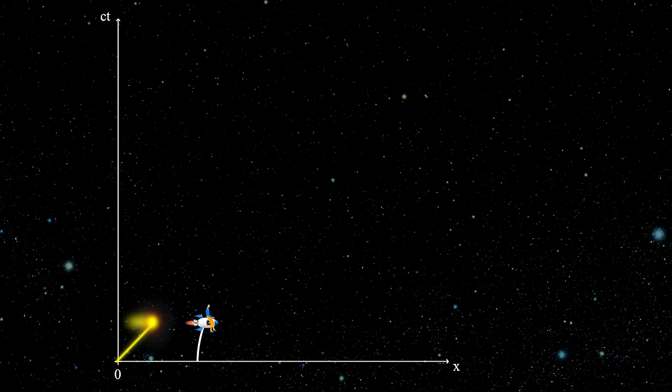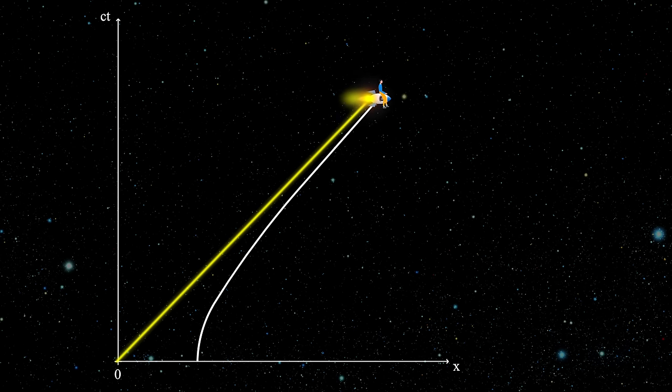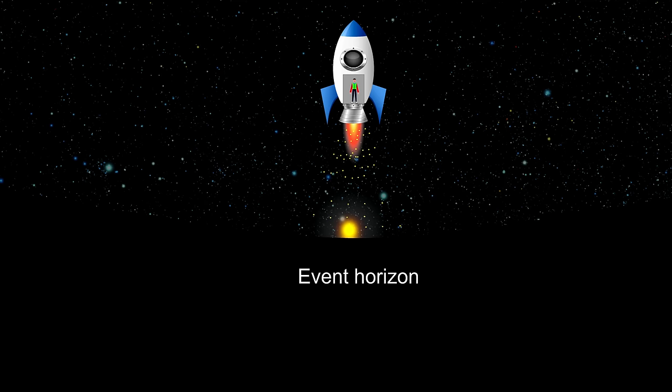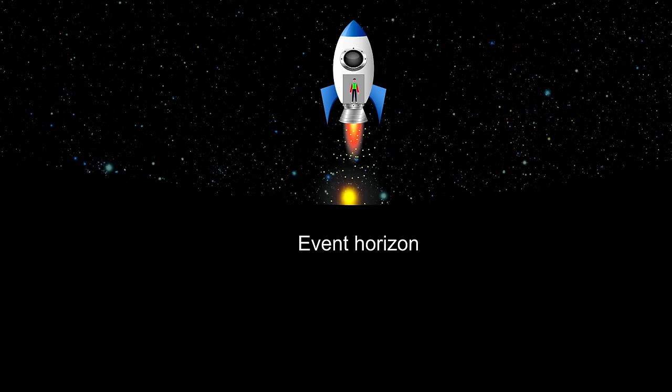Okay, there is one question you might ask. If I send a photon from this position, according to inertial observer, it's getting closer and closer. Does this mean that the event horizon is also approaching the accelerated observer as he travels in the universe?